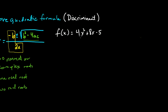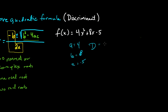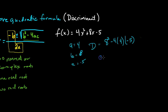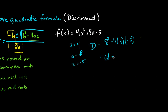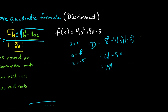Here we have f of x equals 4x squared plus 8x minus 5. So our a is 4, our b is 8, and our c is negative 5. The discriminant here is b squared minus 4 times a times c, which is 8 squared minus 4 times 4 times negative 5. That gives us 64, and negative times a negative is a positive, so 16 times 5 is 80. So in this case I have a discriminant of 144.